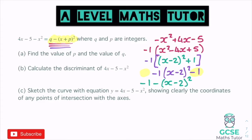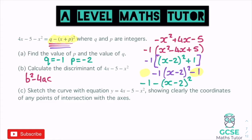So now it's in the format that we want. We can write out what the value of p and q is. q is at the start, so q is the minus 1 there. And p is negative 2 inside the bracket. I always dislike when they write it like this - they've written plus p, and actually p has come out as a negative: p is negative 2. So do just watch out for that. Just because they put plus p doesn't necessarily mean it's going to come out as a positive number. For the next bit, it says calculate the discriminant of this. The discriminant is the value underneath the square root in the quadratic formula, that b squared minus 4ac, which determines for us how many roots this is going to have.